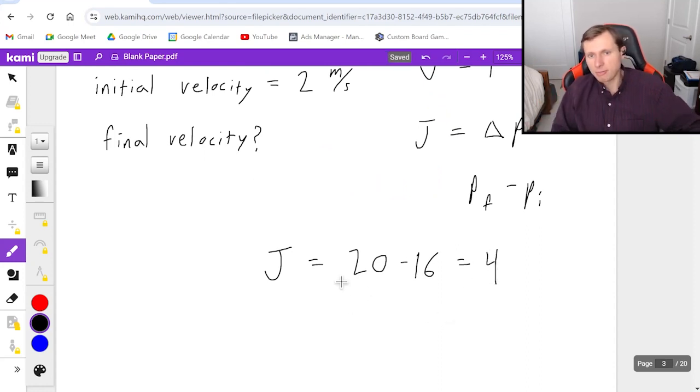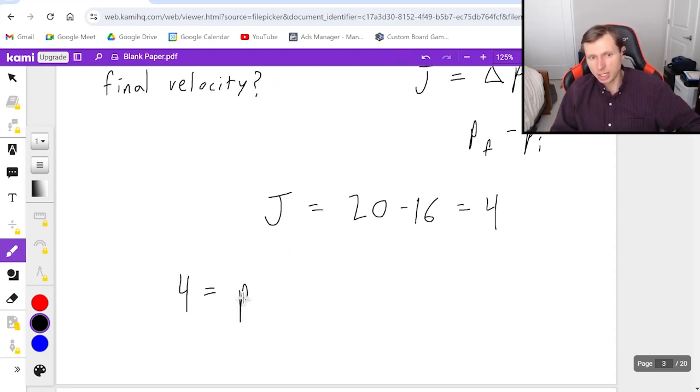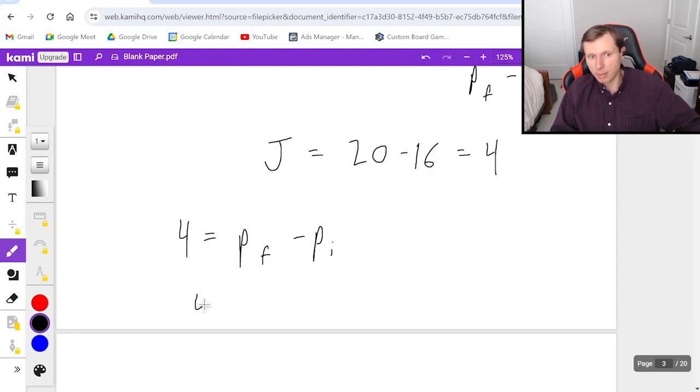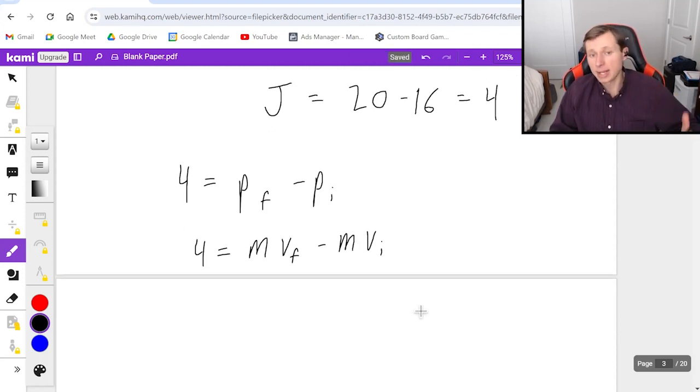So if I want to find the final velocity, I have to set this impulse four equal to the change in momentum, P final minus P initial. Remember that momentum is equal to mass times velocity, so really the delta here is going to be mv final minus mv initial. The mass we know is three, v final is what I'm solving for, minus mass is three, v initial is two.